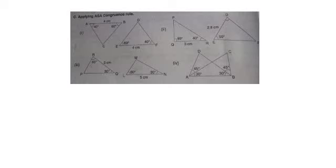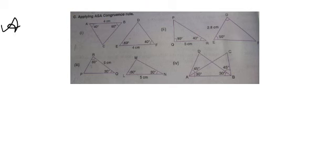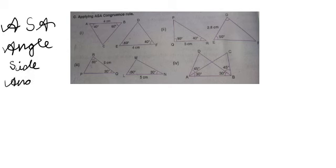Question Number 1, part C. We have to use the ASA congruency rule — that is, applying the angle side angle congruency rule. What does the ASA rule stand for? Angle, then side, then angle once again. There will be two angles that are given and one side will also be given. The two angles have to be of the same measure and the side has to be of the same length in both the triangles.